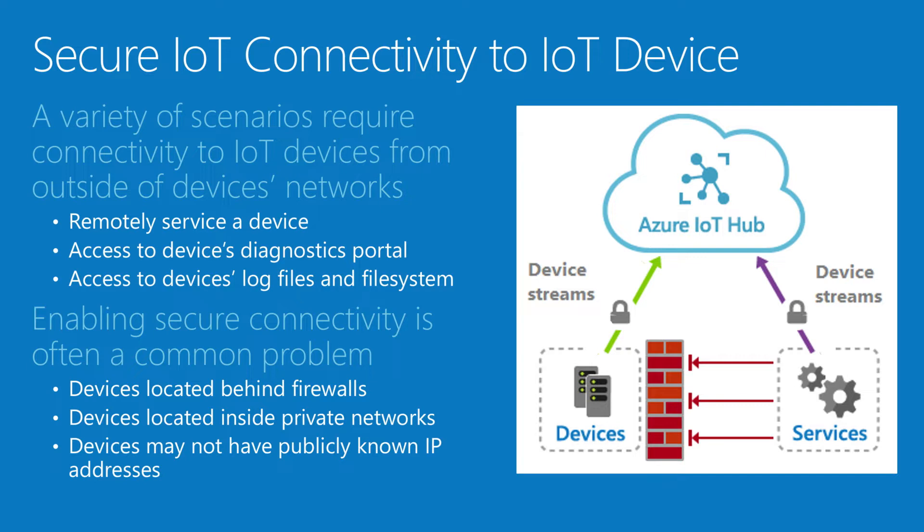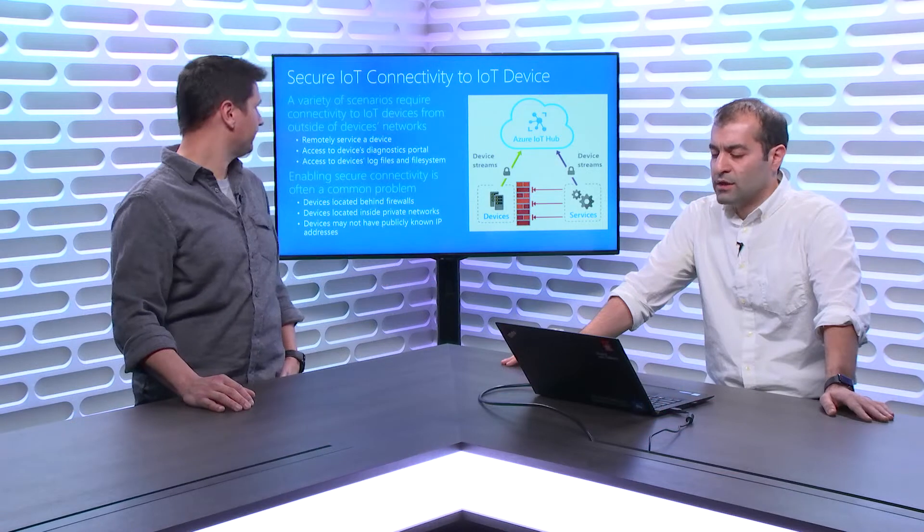As shown in this diagram, even though external services that might need to access the device are blocked from a direct connection line to the device, they may still use Device Streams to rendezvous on the Cloud side. The device and the service both connect to IoT Hub, and IoT Hub acts as a proxy, transferring traffic between the two entities — from device to service and back. The service application also has to authenticate to IoT Hub, so IoT Hub knows both entities and can ensure the end-to-end implementation is totally safe.